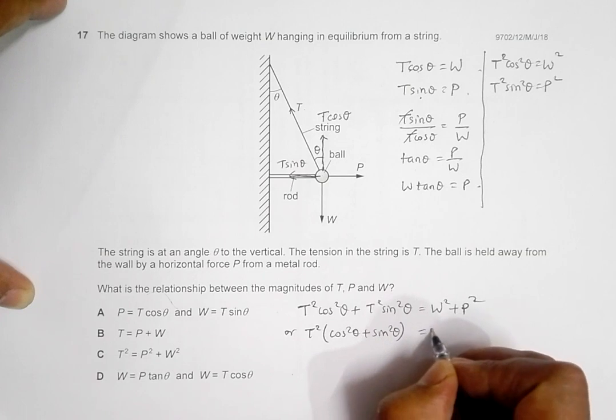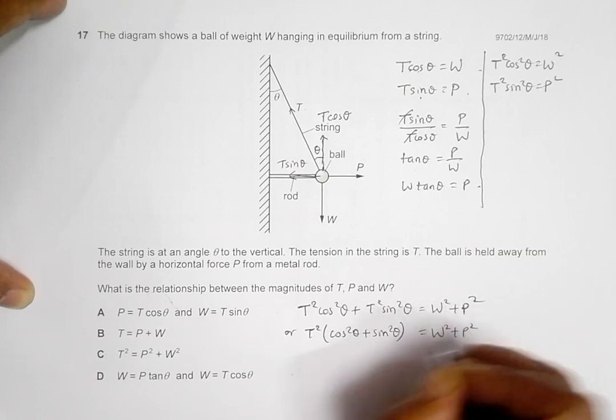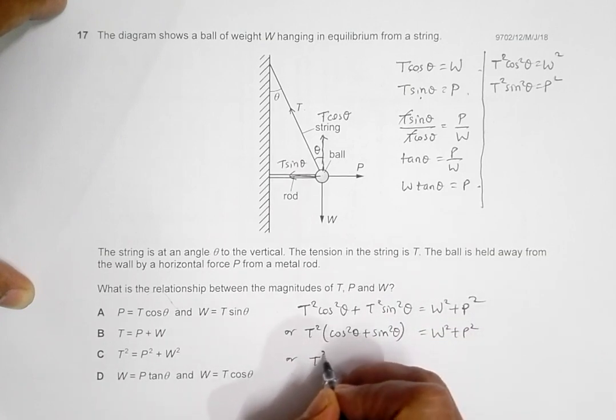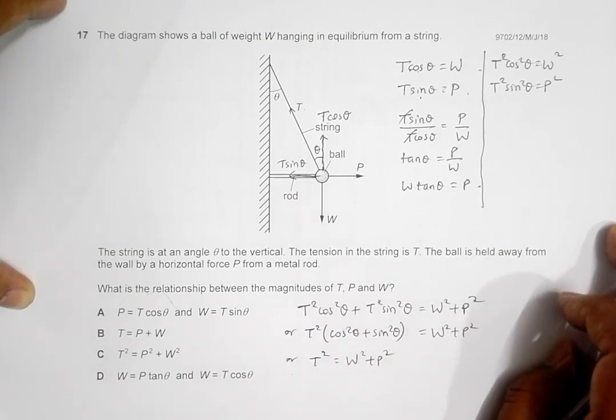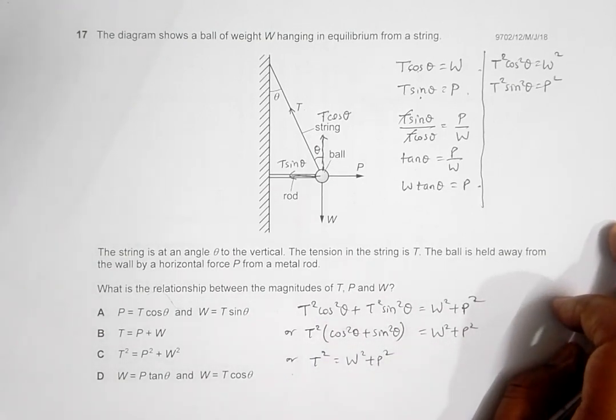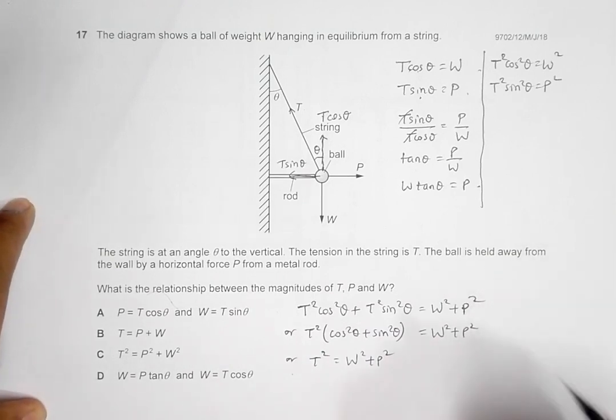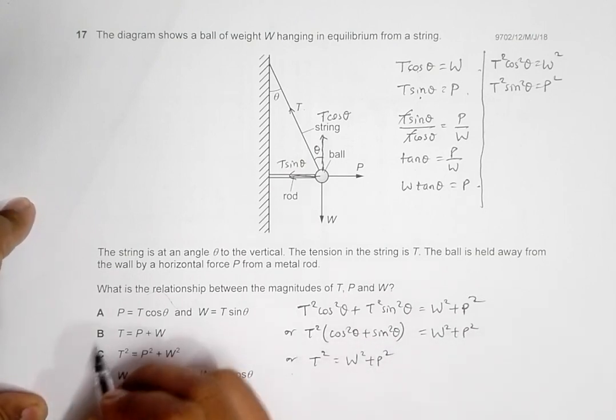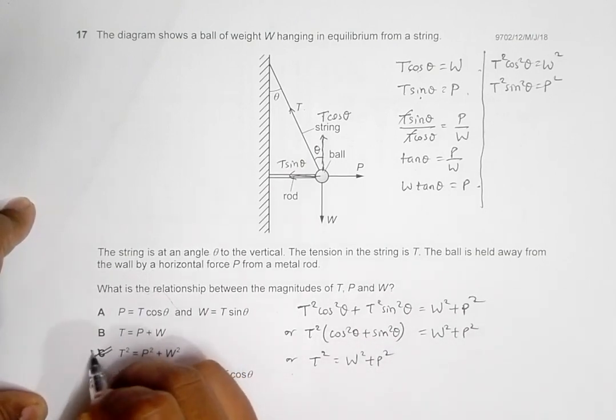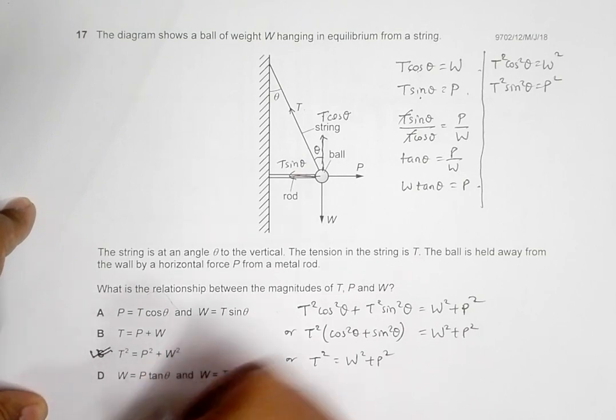Which gives me T² common, cos² theta plus sin² theta equals W² plus P². This further gives me T² equals W² plus P², since cos² theta plus sin² theta equals 1. If you go through here, this is choice number C, and all other options are not true in this case.